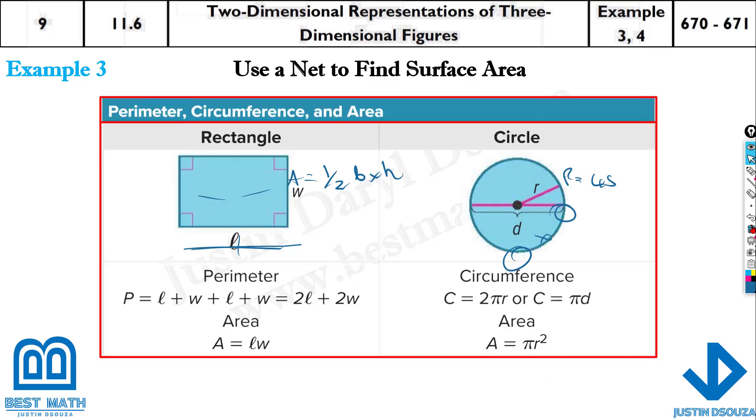What about rectangle and the circle? Rectangle here, the opposite sides are equal, so this is W, this is L, so it'll be 2L plus 2W, that's the width. Area is very simple, multiply the two adjacent sides, not the opposite sides, the corresponding or the adjacent sides are multiplied, length times width.